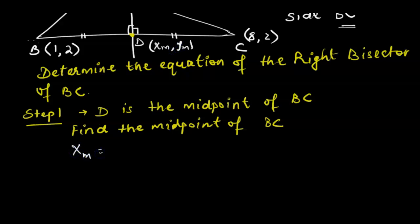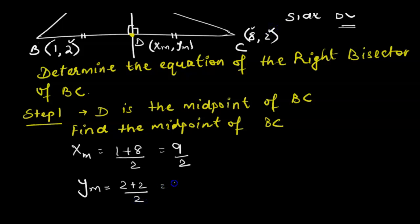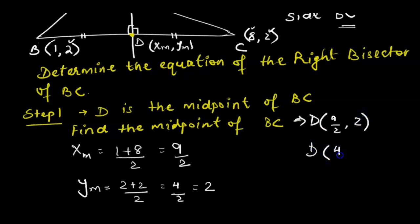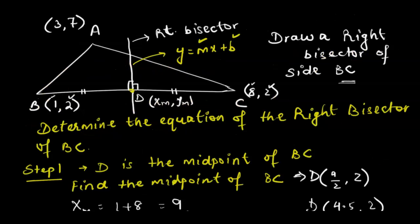To find xm, we use (x1 + x2) / 2, which gives (1 + 8) / 2 = 9/2. For ym, we get (2 + 2) / 2 = 4/2 = 2. Therefore the coordinates of point D are (9/2, 2), or in decimal form, (4.5, 2). By doing so, we have found a point that lies on the right bisector.